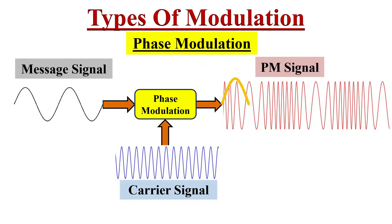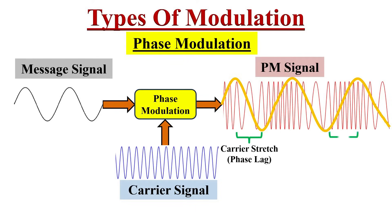In phase modulation, we can observe that when the amplitude of the message signal is falling, the carrier signal is stretching, showing a phase lag in the modulated signal, which causes the frequency of the signal to decrease. Similarly, when the amplitude of the message signal is rising, the carrier signal is compressed, showing a phase lead, and the resultant signal frequency increases. For a sine wave signal, the phase modulated signal looks somewhat similar to the frequency modulated signal. We will discuss phase modulation clearly in another video.